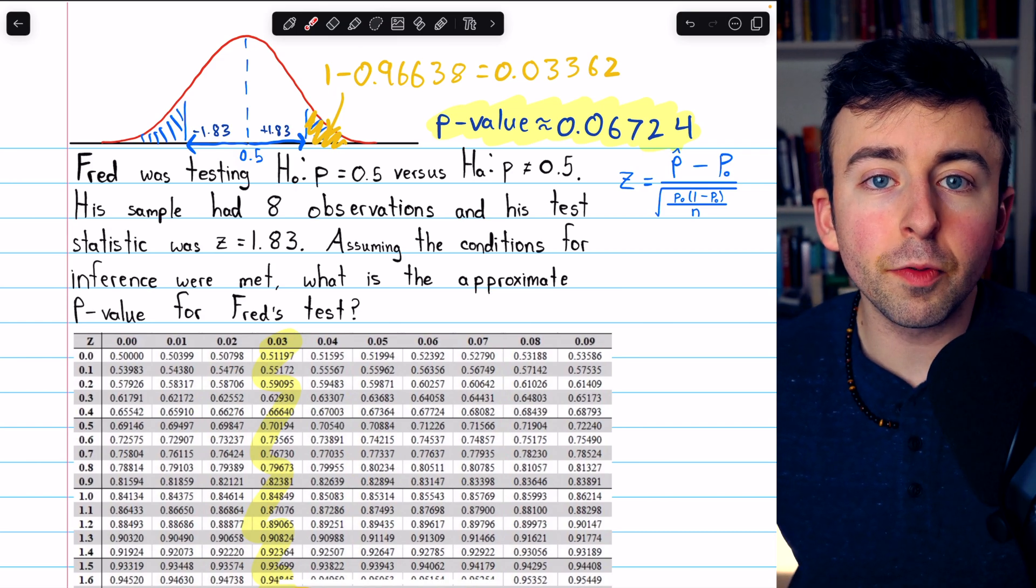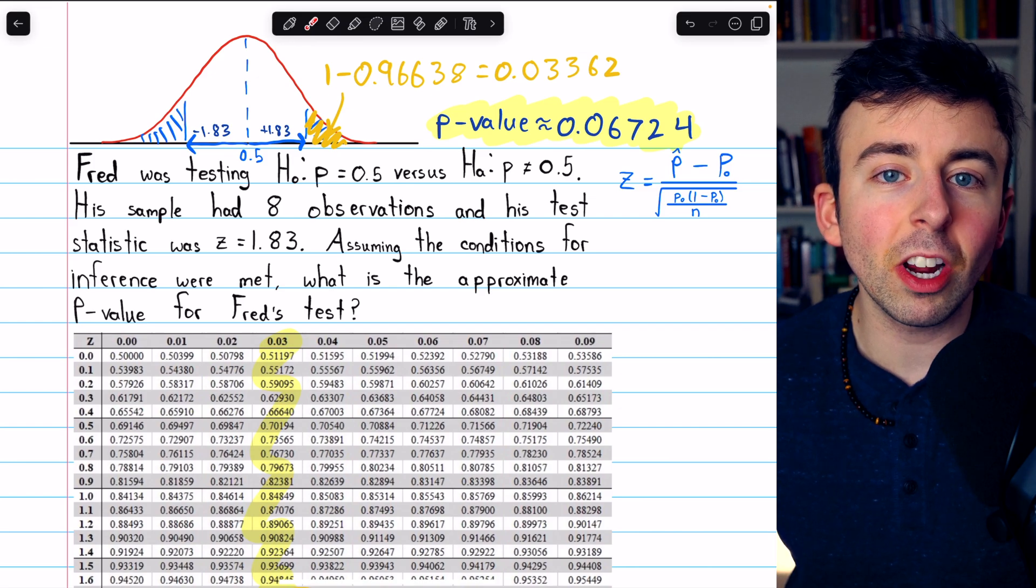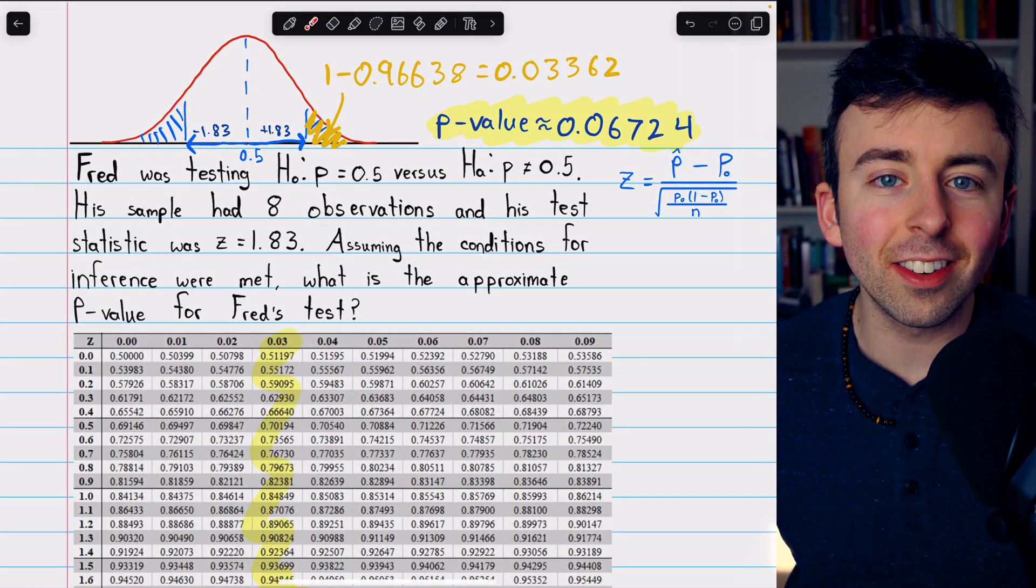That's how you find a p-value from a z-test statistic. Let me know in the comments if you have any questions, and be sure to check out my stats course and stats exercises playlists in the description for more. Thanks for watching.